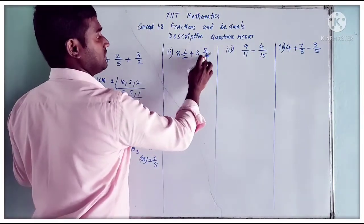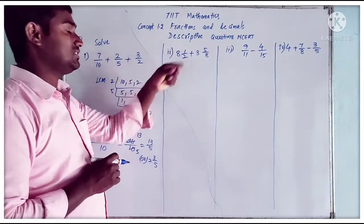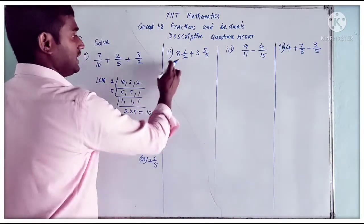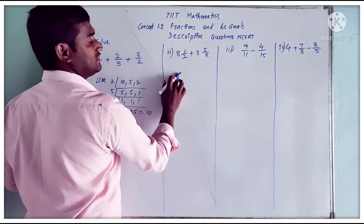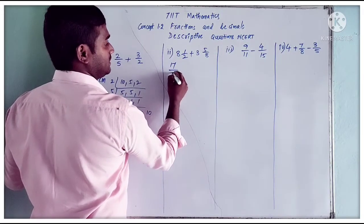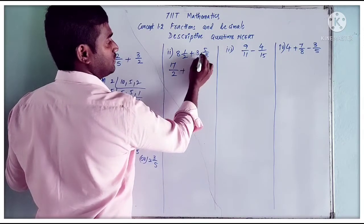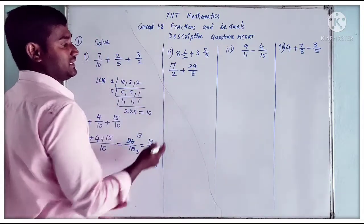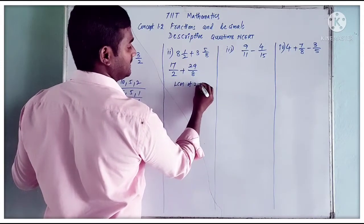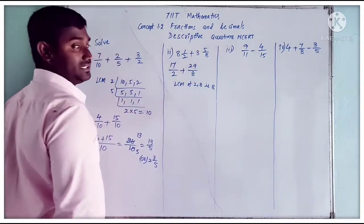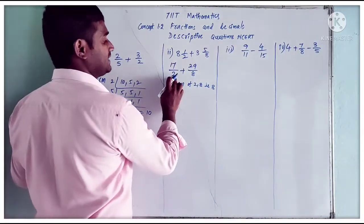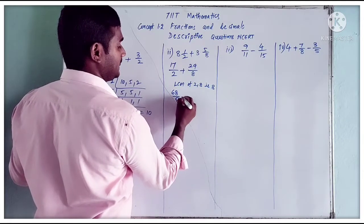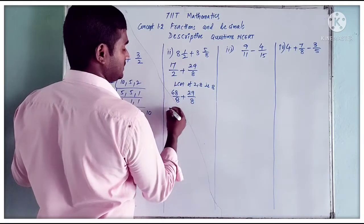Next question: 8 and 1 by 2 plus 3 and 5 by 8. When adding fractions where any number is in mixed fraction form, we convert them to improper fractions. 8 and 1 by 2 becomes 17 by 2. 3 and 5 by 8 becomes 29 by 8. Here we have different denominators, so we need to find the LCM. LCM of 2 and 8 is 8. To get 8, multiply 17 by 4 to get 68 by 8.